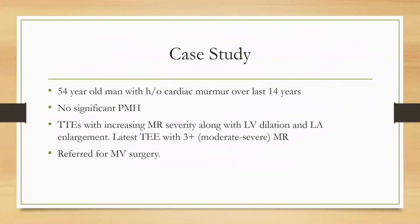Our case study is a 54-year-old man with a history of cardiac murmur over many years, with no other significant past medical history. On echo, he had increased mitral vegetation associated with dilation of his left ventricle and left atrium, and he was referred for mitral valve surgery.